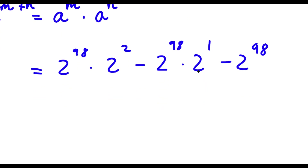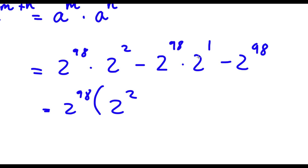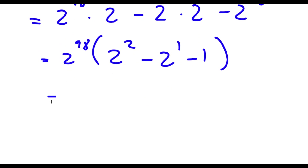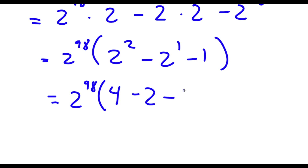Now from here, you can see that all three of these terms have 2 to the power of 98 in them. So if I factor out 2 to the power of 98, I get 2 to the power of 98 times: 2 to the power of 2, minus 2 to the power of 1, minus 1. Now I'm going to go ahead and simplify this. 2 to the power of 2 is 4, and 2 to the power of 1 is simply 2, and I have minus 1.